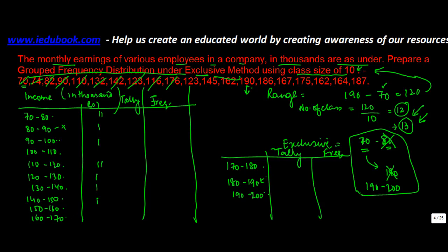Continuing: 176 lies in 170–180. 123 goes in 120–130. 145 goes in 140–150. 162 goes in 160–170. 190 goes in 190–200. 186 goes in 180–190. 167 goes in 160–170. 175 goes in 170–180. 162 and 164 both go in 160–170. 187 goes in 180–190. You just need to be careful whether it's an exclusive or inclusive method and keep track of the upper limit.